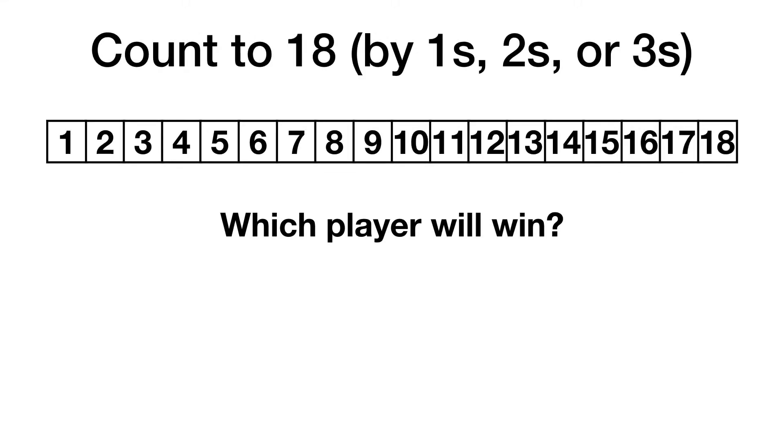Here's a slight variation on our Count to 18 game where each player can count by 1, 2, or 3. What's the best strategy? And which player has the advantage? You should pause the video and try it on your own before continuing.